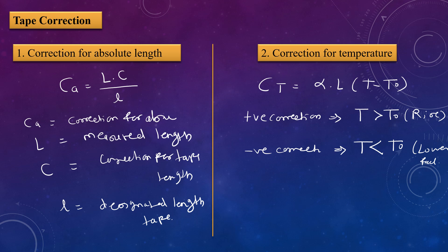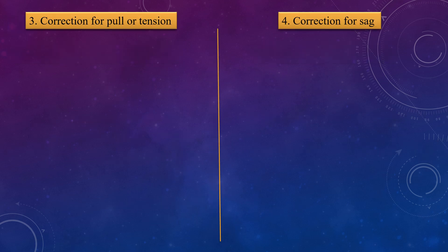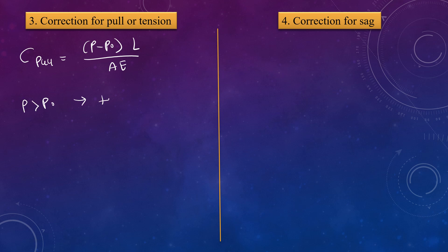The third correction is the correction for pull or tension. The formula is: C_pull = (P − P₀) × l / (AE). If P is greater than P₀, this is a positive correction. If P is less than P₀, this is a negative correction.